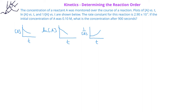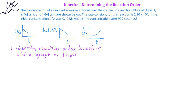In order to solve this problem, the first thing we need to do is determine the order of this reaction. We have three graphs which we can use to help determine the reaction order. The first graph, concentration of A versus t, is the zero order graph. The second graph, natural log of concentration versus t, is the first order graph. And the third graph, reciprocal of concentration versus t, is the second order graph. You should recall from a previous video that whichever graph produces a straight line, that graph will indicate the order of the reaction.